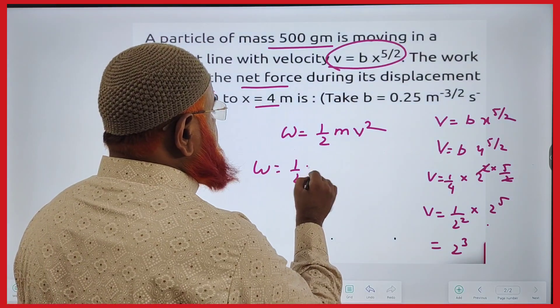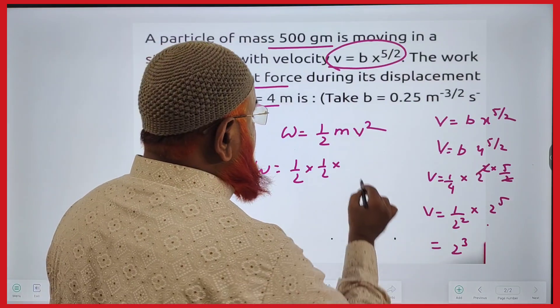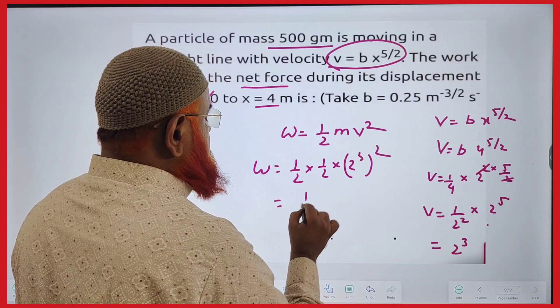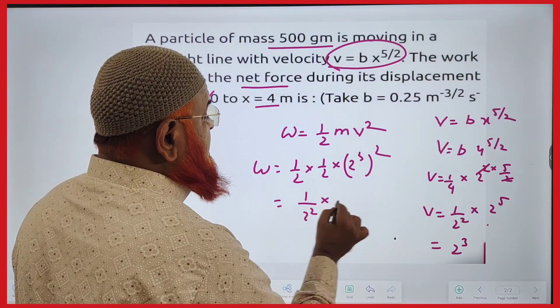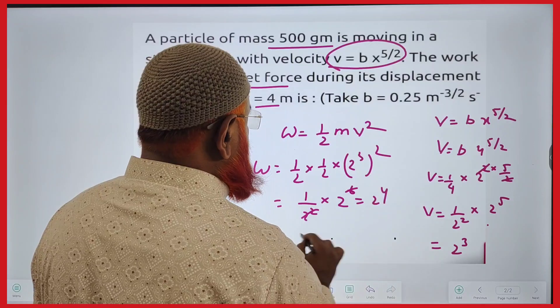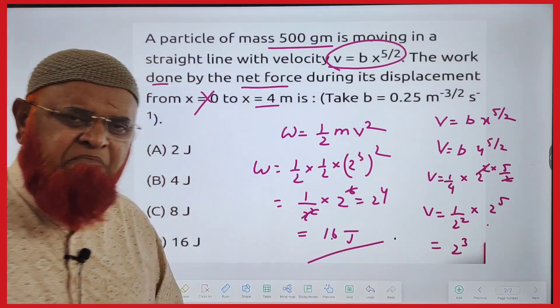So W is equal to half. Mass is how much here? 500 grams means half kg. Into V square is nothing but 2 cube whole square again. So this is 1 by 2 square into 2 power 6. So this is getting cancelled, it's going 2 power 4. So okay, 16 joules is going to be an answer. That's simple.